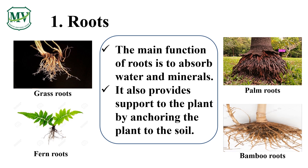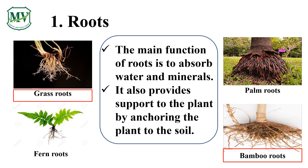There are two types of roots. The bamboo, for example, has a taproot because it has a large and thick main root with smaller roots growing from it. The grass roots is an example of a fibrous root — it doesn't have a main root but only thin and branching roots.